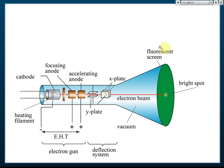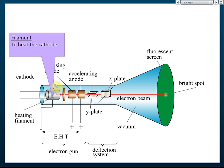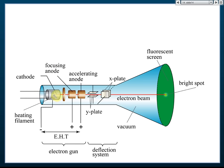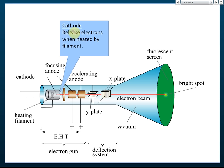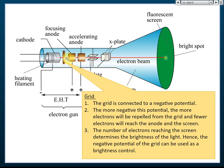Looking at the electron gun in detail: the heating filament, usually made of tungsten, heats the cathode. The function of the heating filament is to heat the cathode up to a certain temperature. Once heated, the cathode releases electrons. So the function of the cathode is to release electrons when heated by the filament.